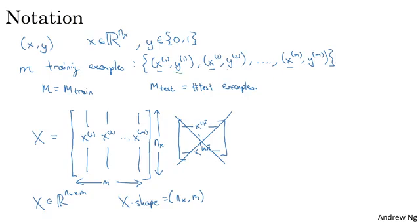How about the output labels y? It turns out that to make your implementation of a neural network easier, it would be convenient to also stack y in columns. So we're going to define capital Y to be equal to y1, y2, up to ym like so. So Y here will be a 1 by m dimensional matrix. And again, to use the Python notation, the shape of Y will be (1, m), which just means this is a 1 by m matrix.